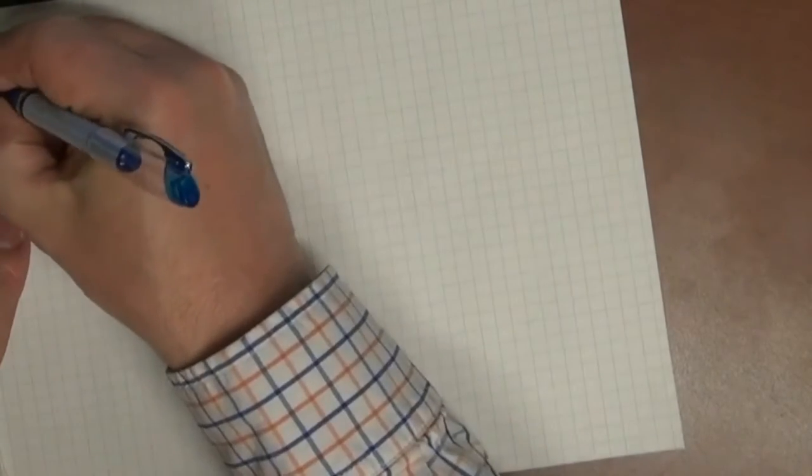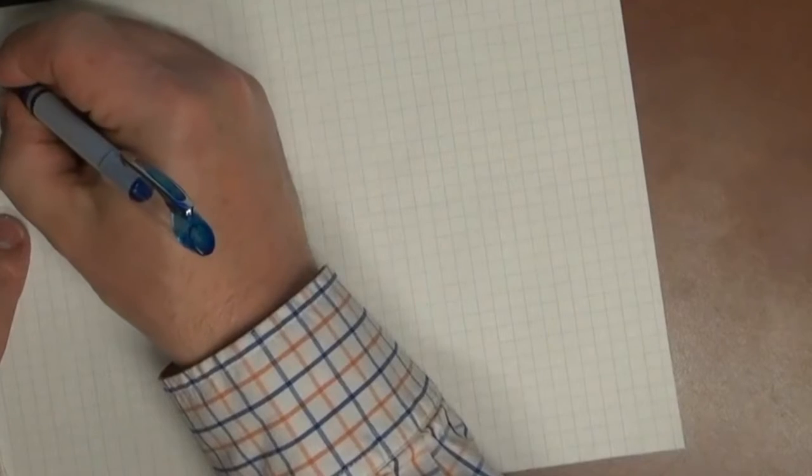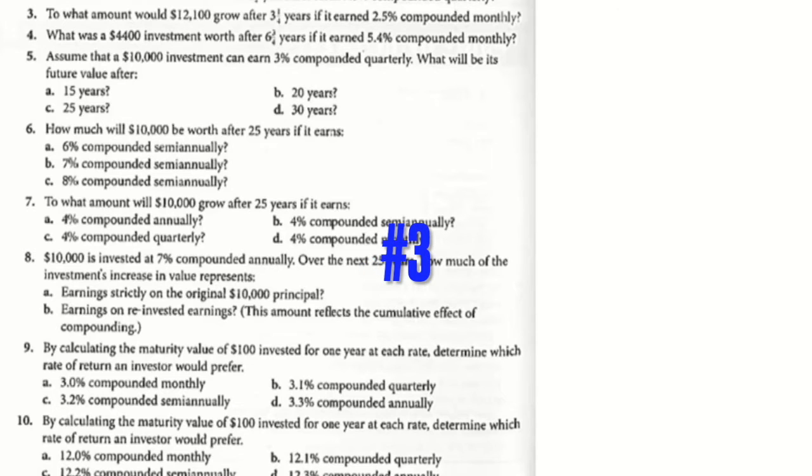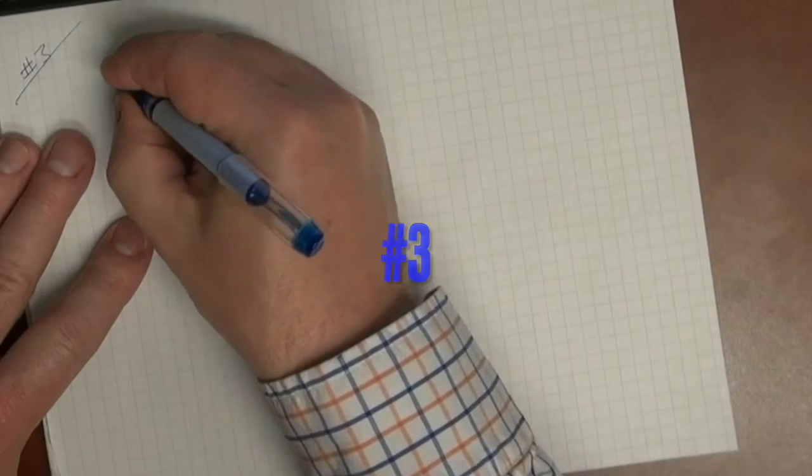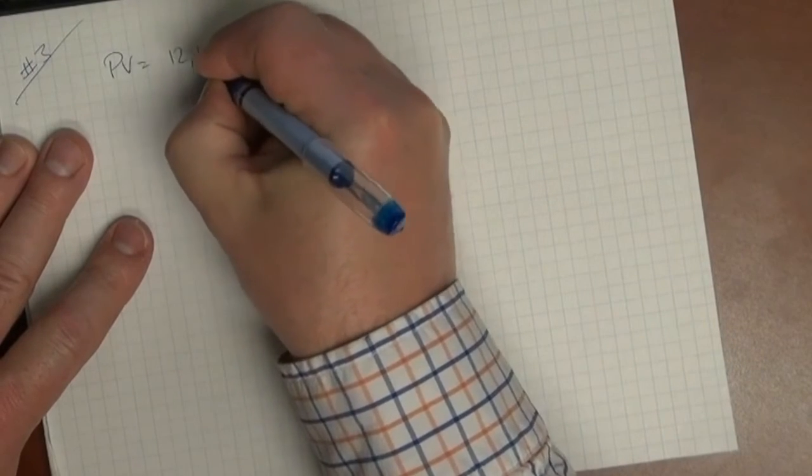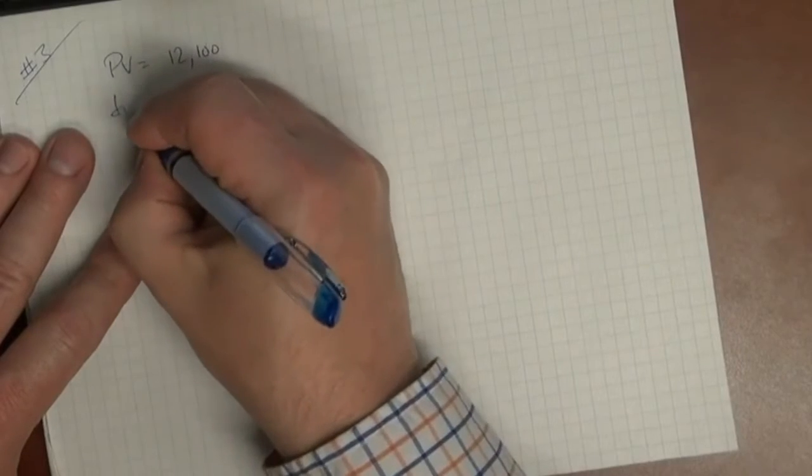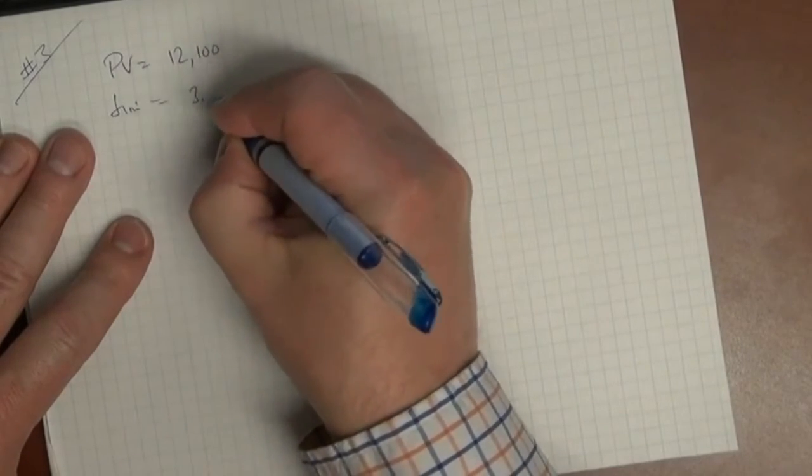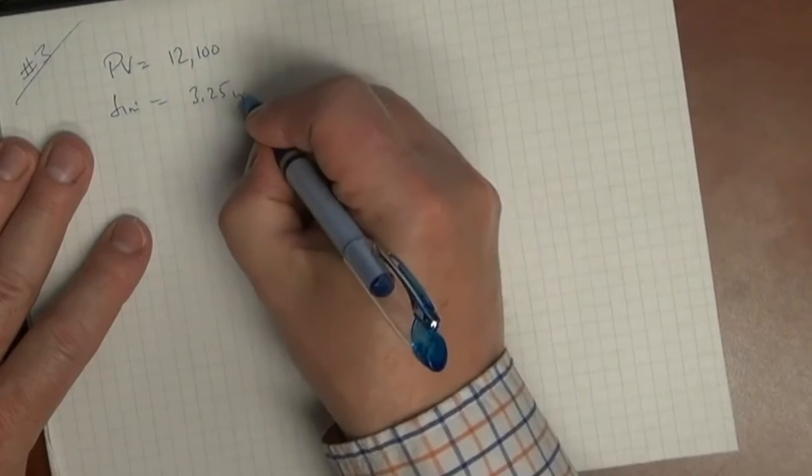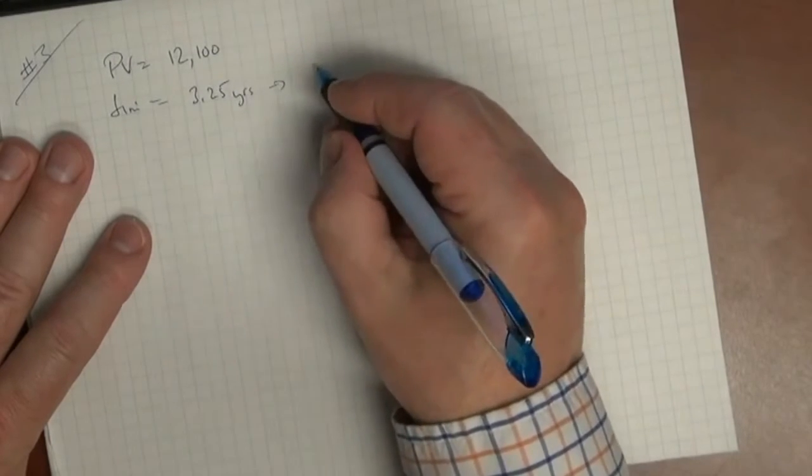Okay, let's take a look at number three. Number three is a good example for showing how this future value thing works. Number three says, what amount would $12,100 grow after three and a quarter years if it earned 2.5% compounded monthly? So let's take a look. Let's dissect that into its key components. The present value is $12,100. That's how much money we have there. The time is three and a quarter years, 3.25 years. And we'll notice that it's compounded monthly.